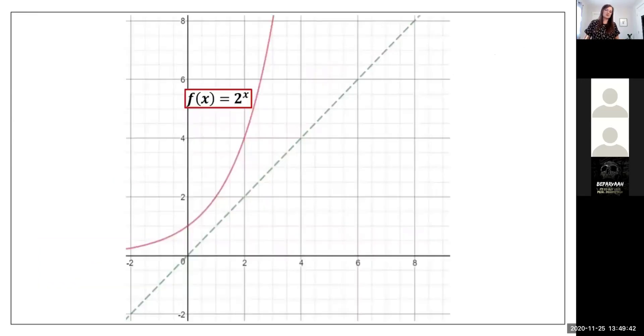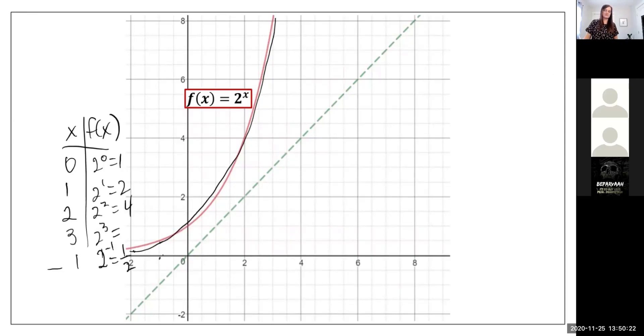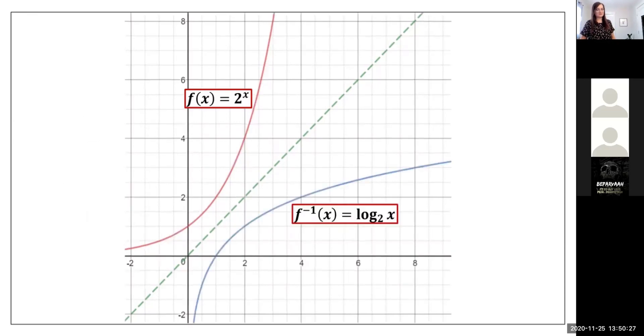And also when you graph these, so two to the power of X, you'll be asked to graph. Right. And so you could just make a table of values and say if you had zero to the power of zero is one. If you had one to the power of one is two, you know, two to the power of two is four and so on. So that creates that function. And the inverse, if you graph a log base two of X is going to be the exact mirror image across the Y equals X line. And that's because they are inverses of each other.